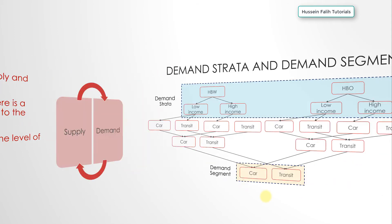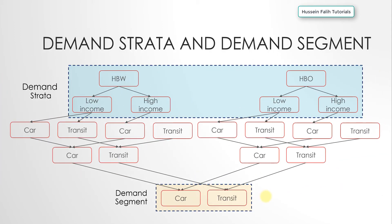Finally, a visual comparison between demand strata and demand segments. Starting at the activity or trip purpose level, I have a home-based work trip and a home-based other trip. Going down, I split each trip purpose by person groups — low income and high income — for each activity pair. This area represents my demand strata, which is on the demand side of the model.